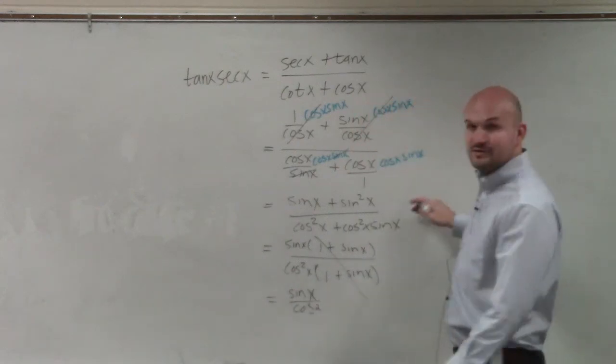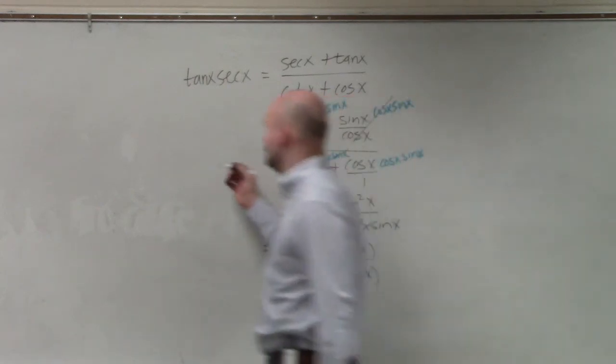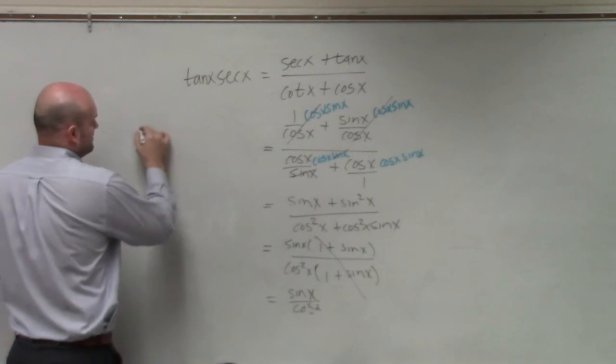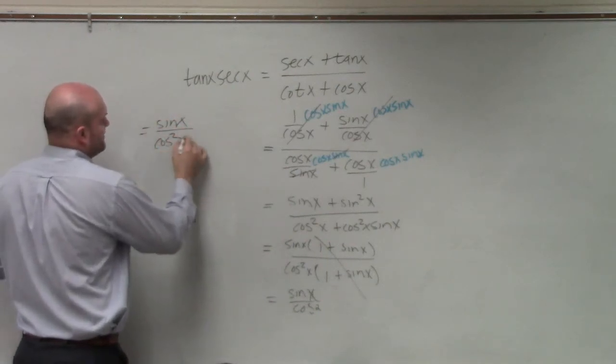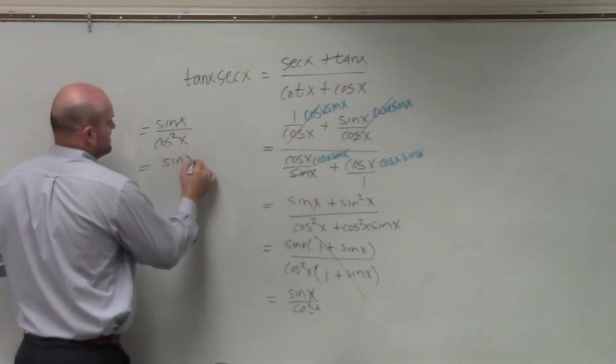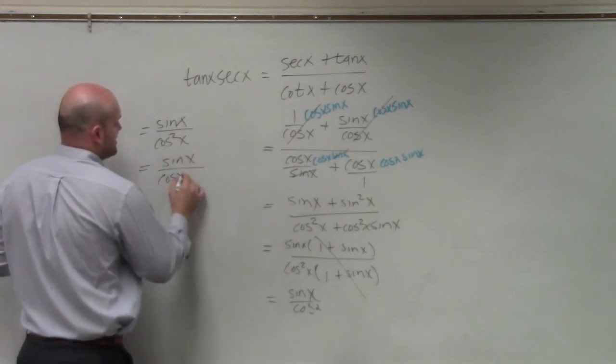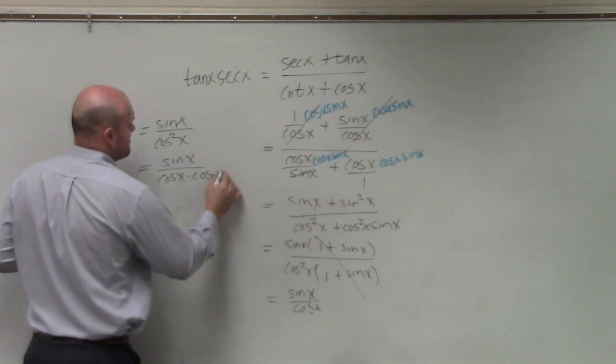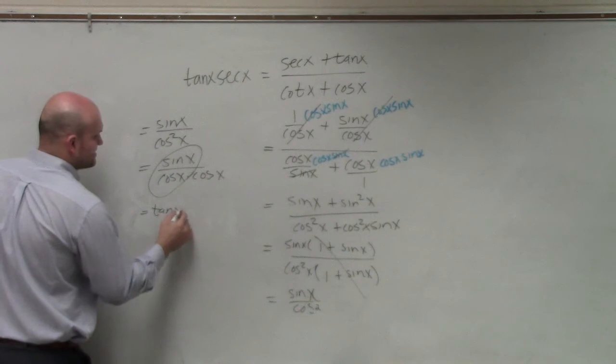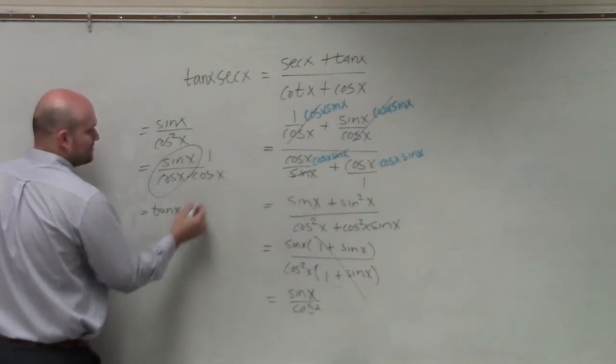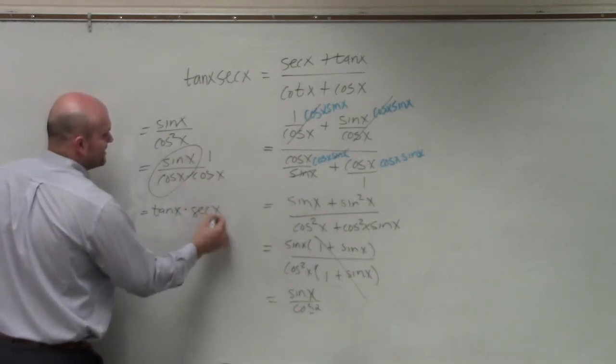So one thing you guys can know or write or look at. You guys agree with me that sine of x over cosine squared of x is equal to sine of x over cosine of x times cosine of x? You guys agree with me on that? Group those together. That's tangent of x times 1 over cosine of x, which is secant of x.